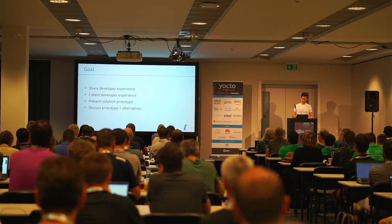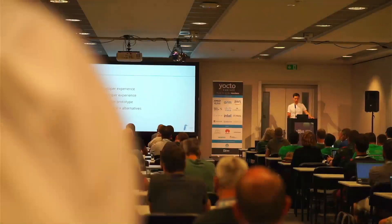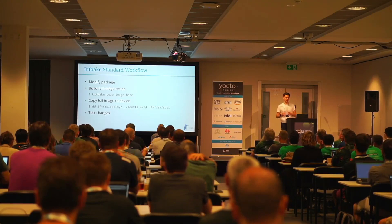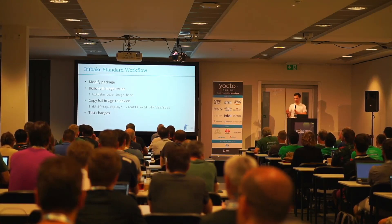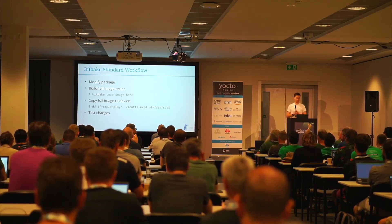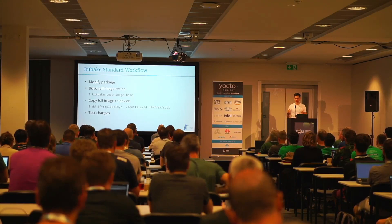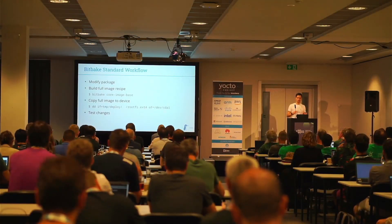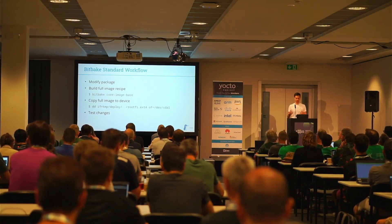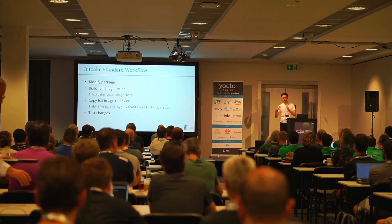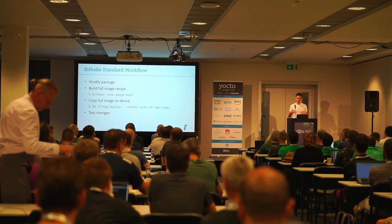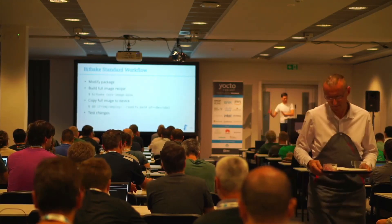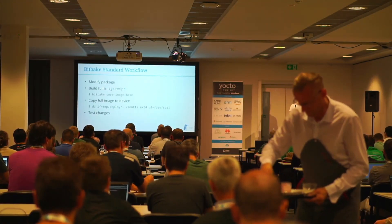The goal is to share our developing experience with the Yocto project for quick iteration cycles, and maybe collect other developers' experience or alternatives in discussion. As I promised, a bit on the background: the standard workflow when changing a recipe or package is to modify the code or recipe metadata, generate a full image — for example, bitbake core-image-base — wait until the full image is built, copy the image to the target, and then test your changes.